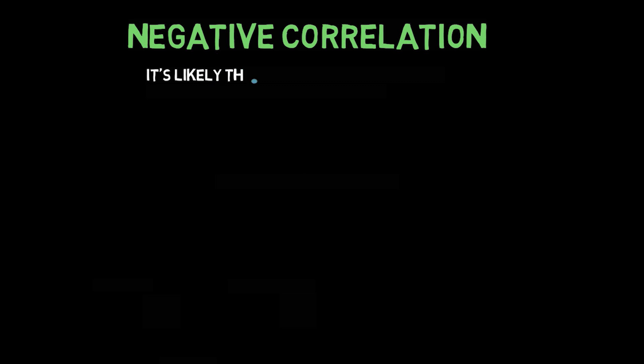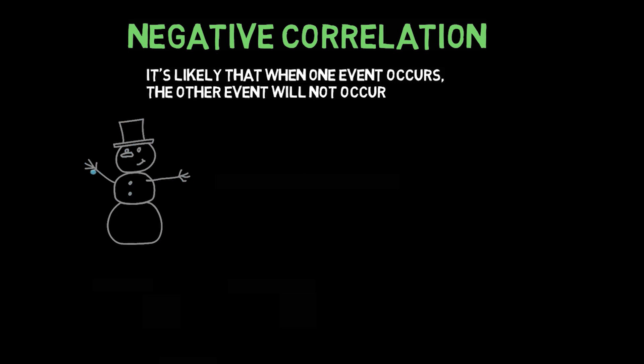On the other hand, two states are negatively correlated when it's likely that when one event occurs, the other will not occur. For instance, when it snows, it's often not very sunny. So snowing and sunniness are negatively correlated.